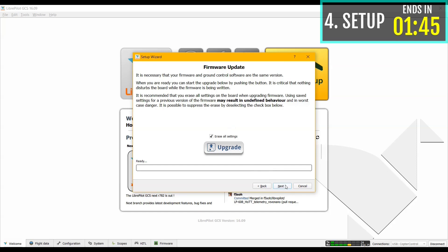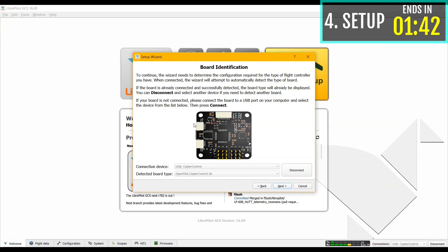After that's done, click next. Next, you will be seeing your board in this section. If you don't, disconnect and connect the CC3D once again to your computer. Click next.